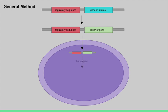The cell will now transcribe the reporter gene into an mRNA and subsequently translate it into a protein product. This protein will produce some type of signal that is easily measured.